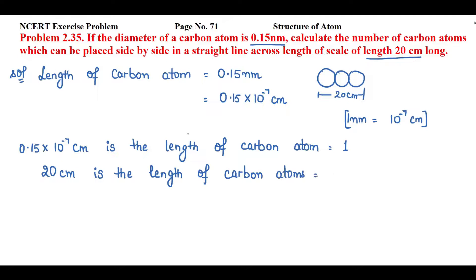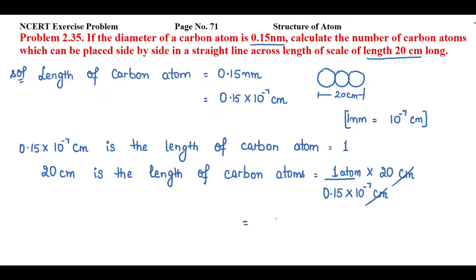So the number of carbon atoms equals 1 divided by 0.15 into 10 raised to power minus 7 centimeter, multiplied by 20 centimeter. Canceling the centimeter units, we get 20 into 10 raised to power minus 7 in the denominator. Taking 10 raised to power minus 7 to the numerator changes its sign, giving 10 raised to power 7, divided by 0.15.